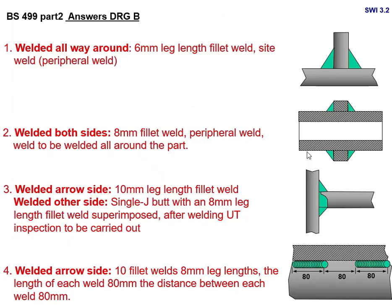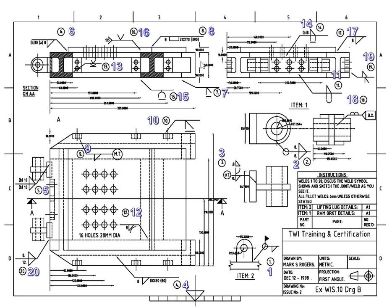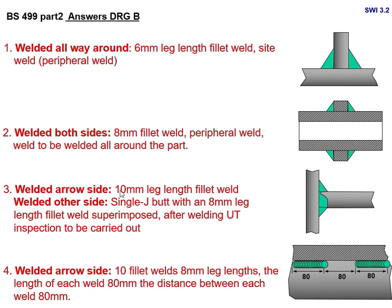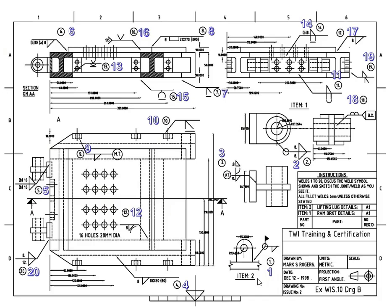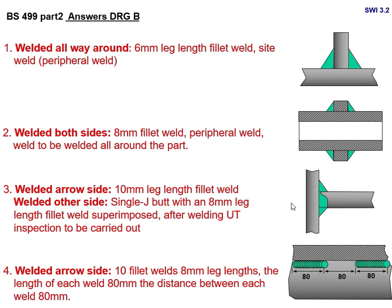For joint number 3, the joint configuration is: welded arrow side — 10 mm leg length fillet weld; welded other side — single J-butt with 8 mm leg length. After welding, UT (ultrasonic) inspection is to be carried out. You can see the J on the other side and the fillet is 10 mm. There is also an 8 mm leg length, and after welding you have to do the UT inspection. Write this way in your answer sheet.